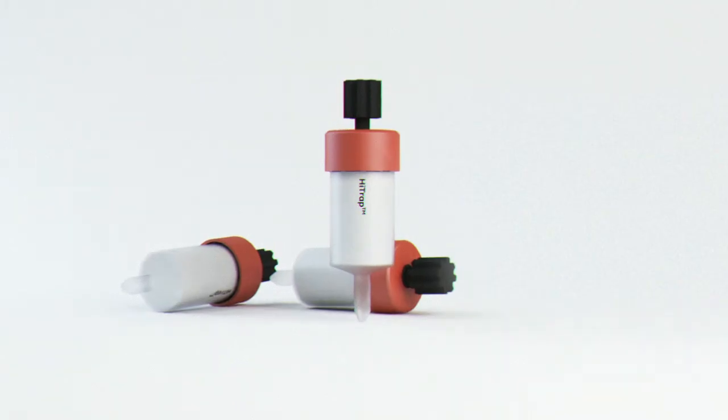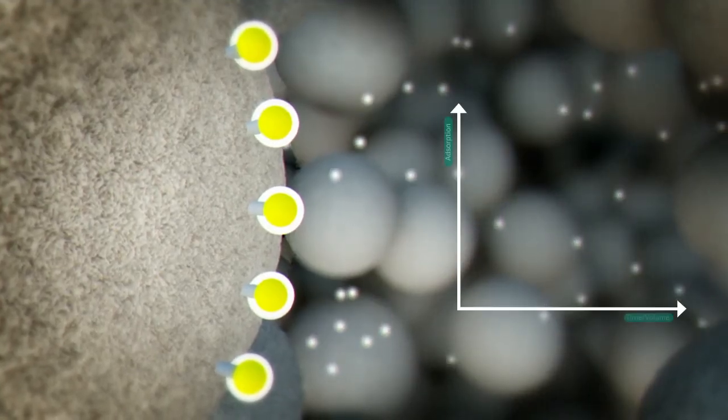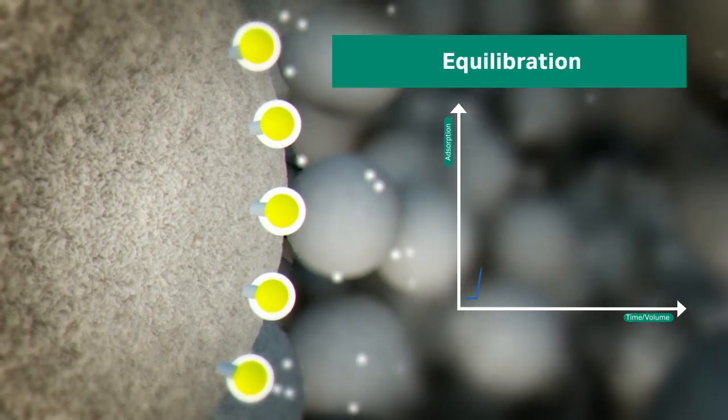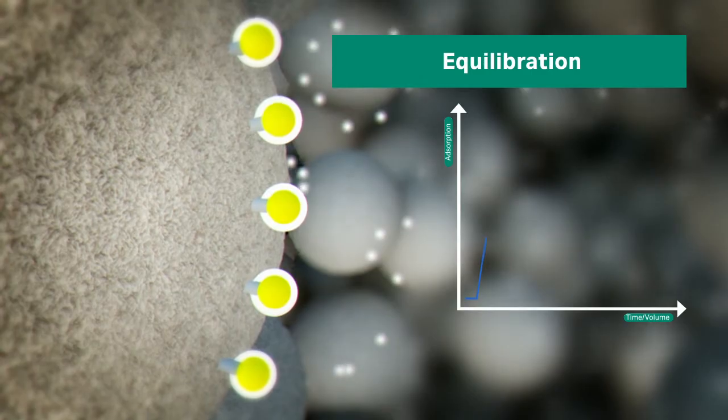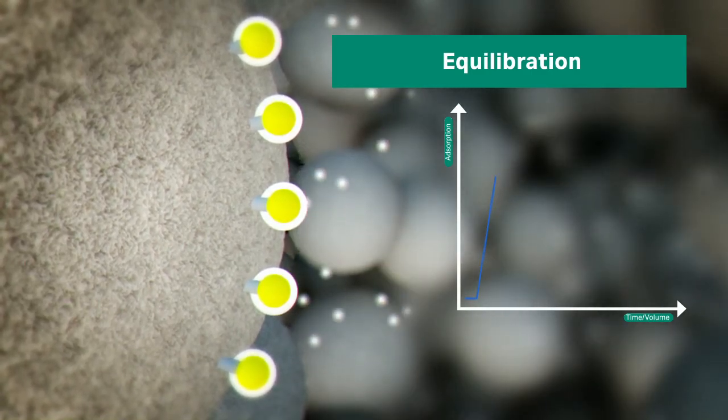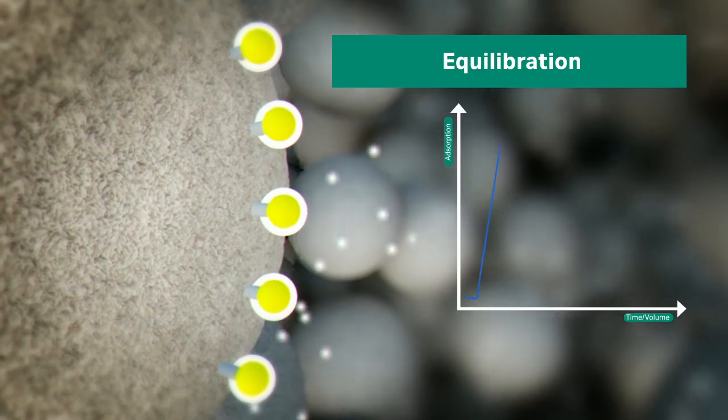The first step is the equilibration of the stationary phase to the desired start conditions. Equilibration is performed by adding salt to the mobile phase. The general equilibration buffer in this step is 50 millimolar sodium phosphate with 1 to 1.5 molar ammonium sulfate.